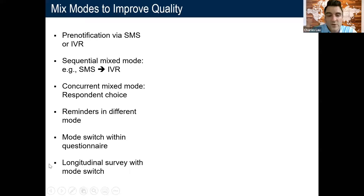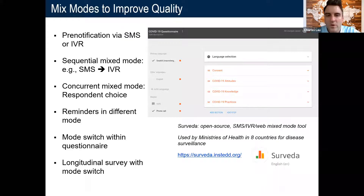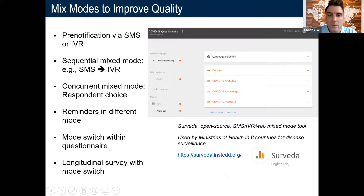If you're doing a longitudinal survey, you can use different modes over time — maybe start with a CATI study and at the end of the interview ask if respondents would like to follow up with SMS or IVR for weekly surveys. When you do mixed mode surveys, it's best to use a survey tool built for mixed mode surveys. We built one called Surveyed — an open source SMS, IVR, and web mixed mode tool oriented for ministries of health. We've used it in eight countries for disease surveillance.